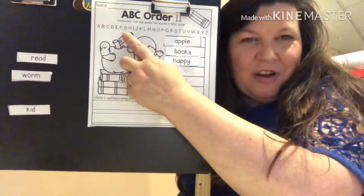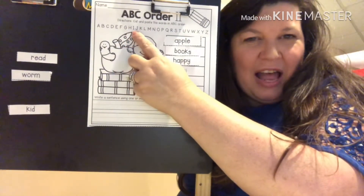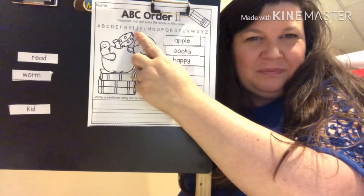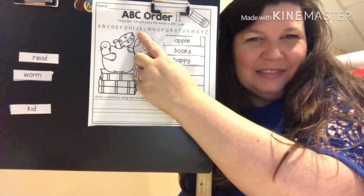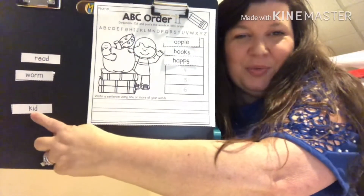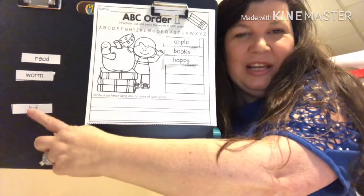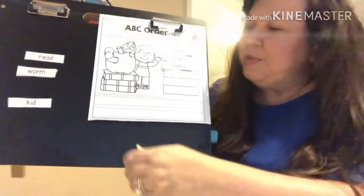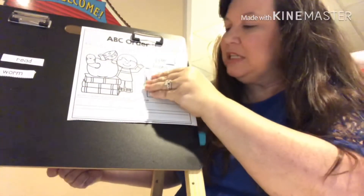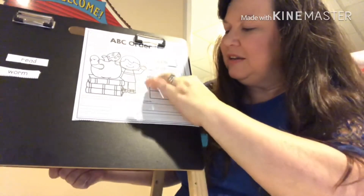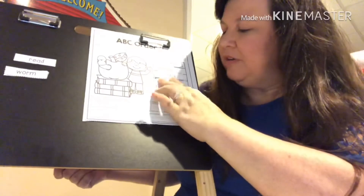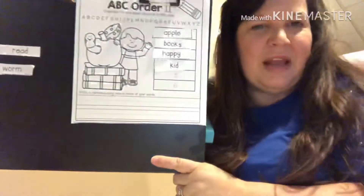Let's continue. We left off with H. I — do we have any I words? What about J? K — oh, we do! We do have a K word. You're right, it's the word kid. So we need to take that one — it's going to be the next word that goes in this blank. There we go, so now we have it on there.